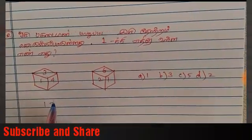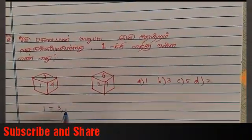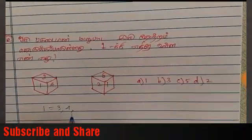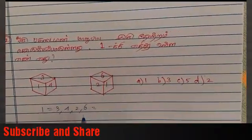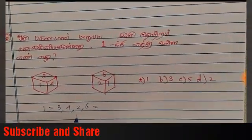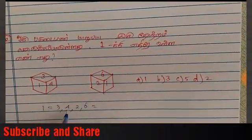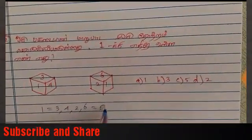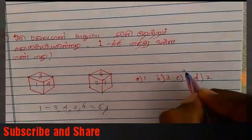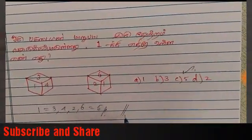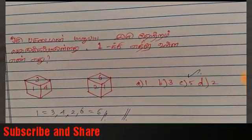Now what we have here: 1, 3, 4, 2, 6. The numbers are 1, 2, 3, 4, 6. The number that is missing is 5. So the answer is 5.